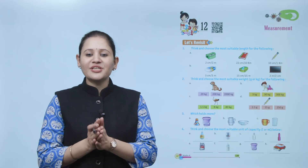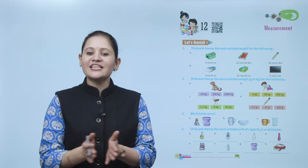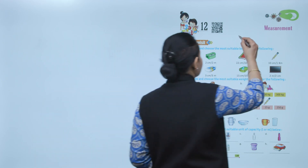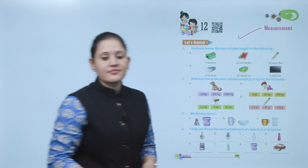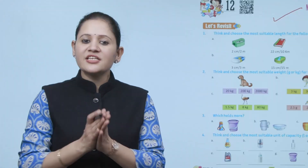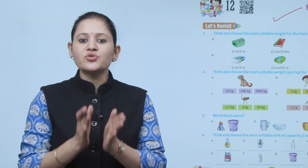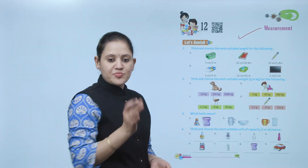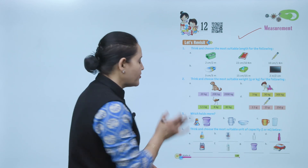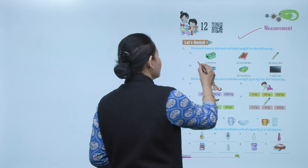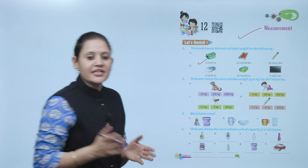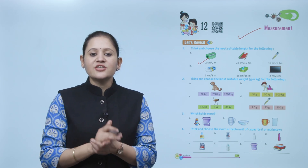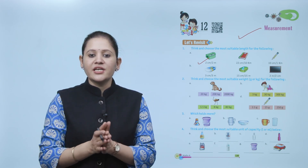Hello kids, welcome to today's class. Today we'll do measurement. Let's revisit and choose the most suitable length for the following. First one is a sharpener — a small object — so we'll measure it in centimeters. Two centimeters is the correct answer.